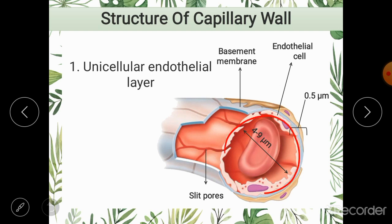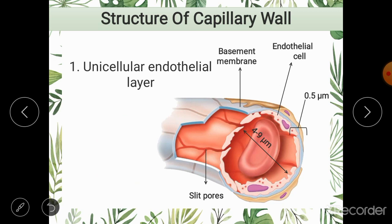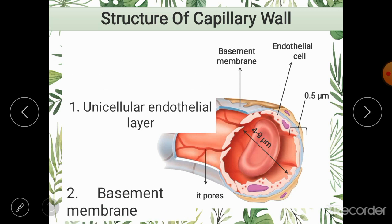The capillary wall is made up of a single layer of endothelial cells — like a wall of a well made up of only one layer of bricks. The advantage of the capillary wall being one cell thick is that it provides an easy diffusion pathway for substances to move between the capillaries and the tissues.